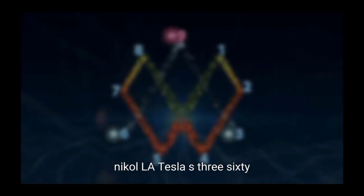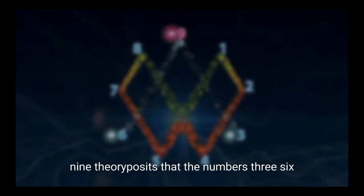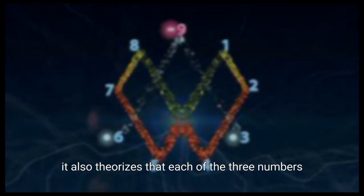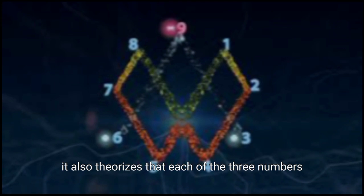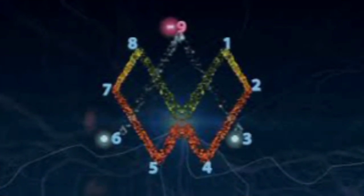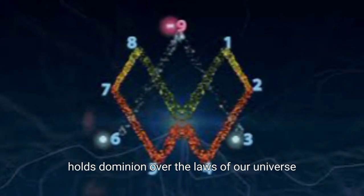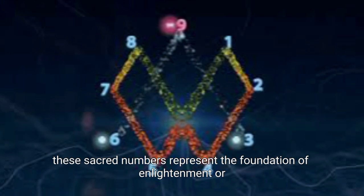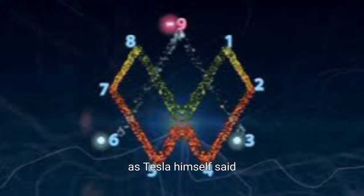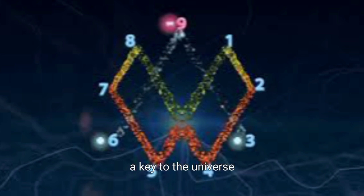Nikola Tesla's 369 theory posits that the numbers 3, 6, and 9 represent higher dimensions than our three-dimensional reality. It also theorizes that each of the three numbers, especially the number 9, holds dominion over the laws of our universe. These sacred numbers represent the foundation of enlightenment, or, as Tesla himself said, a key to the universe.